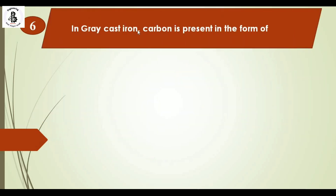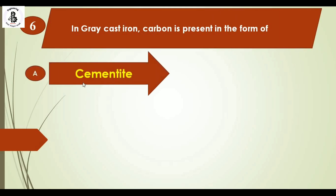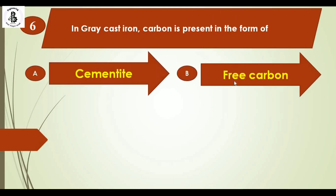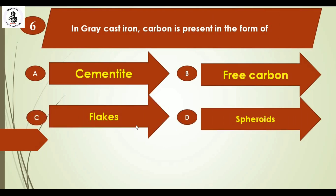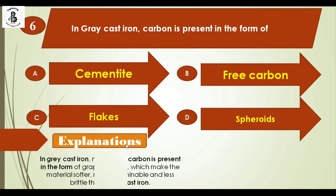In gray cast iron, carbon is present in the form of: option A cementite, option B free carbon, option C flakes, and option D spheroids. In gray cast iron, most of the carbon is present in the form of graphite flakes, which makes the material softer, more machinable and less brittle compared to white cast iron. The right answer is option C, in the form of flakes.